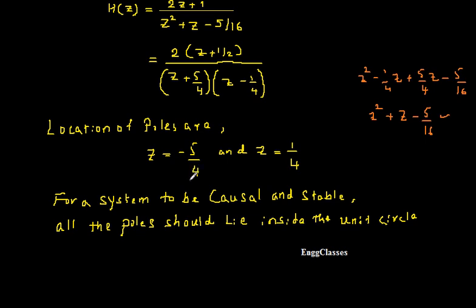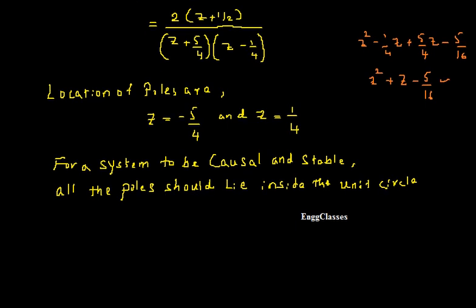Checking each pole: Z = 1/4 lies inside the unit circle. But Z = -5/4 equals -1.25, and since its magnitude is greater than 1, it lies outside the unit circle. Therefore, the system is not causal and stable, because one of the poles lies outside the unit circle.